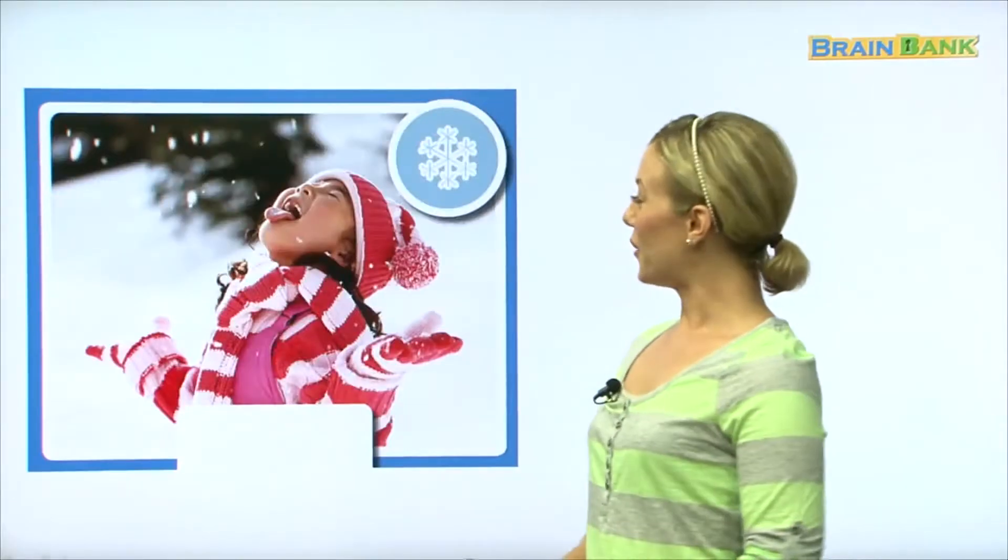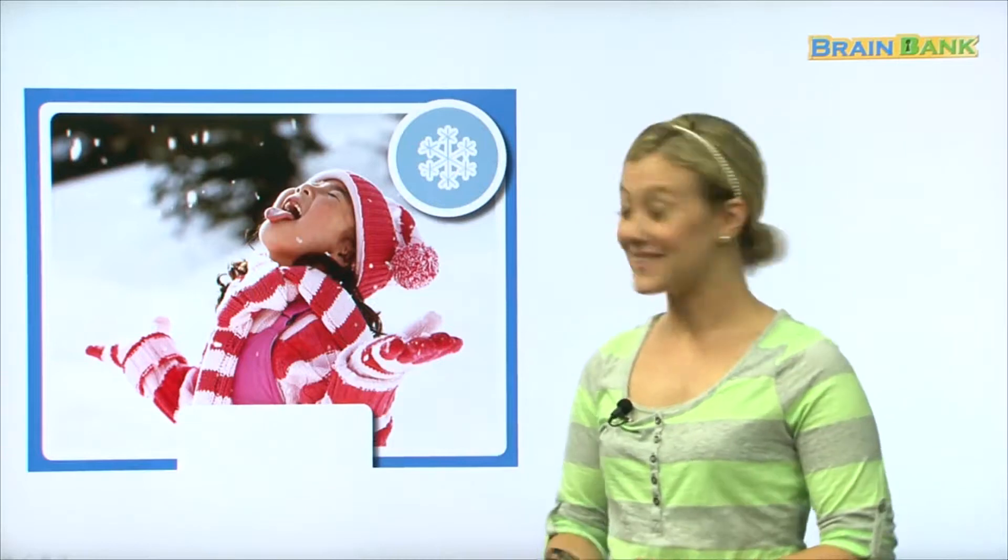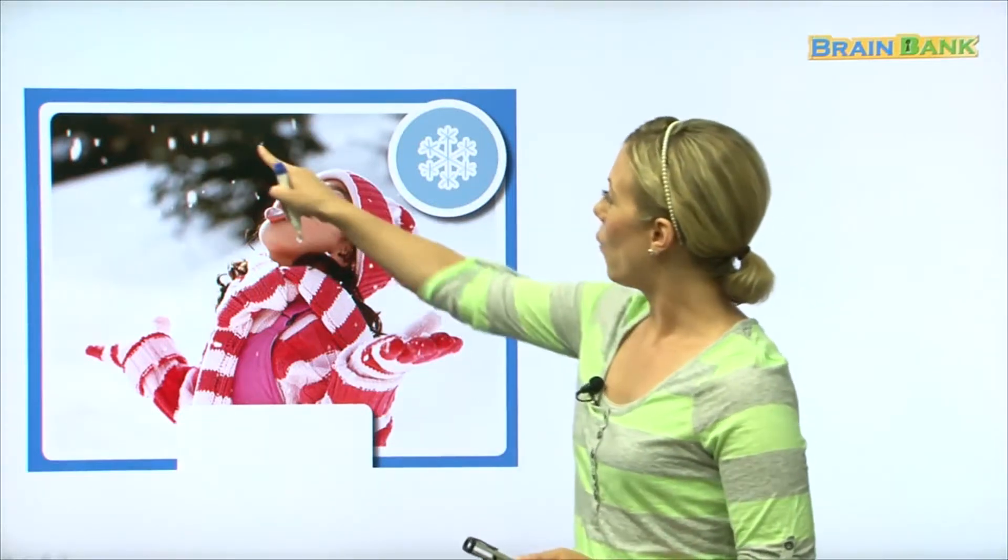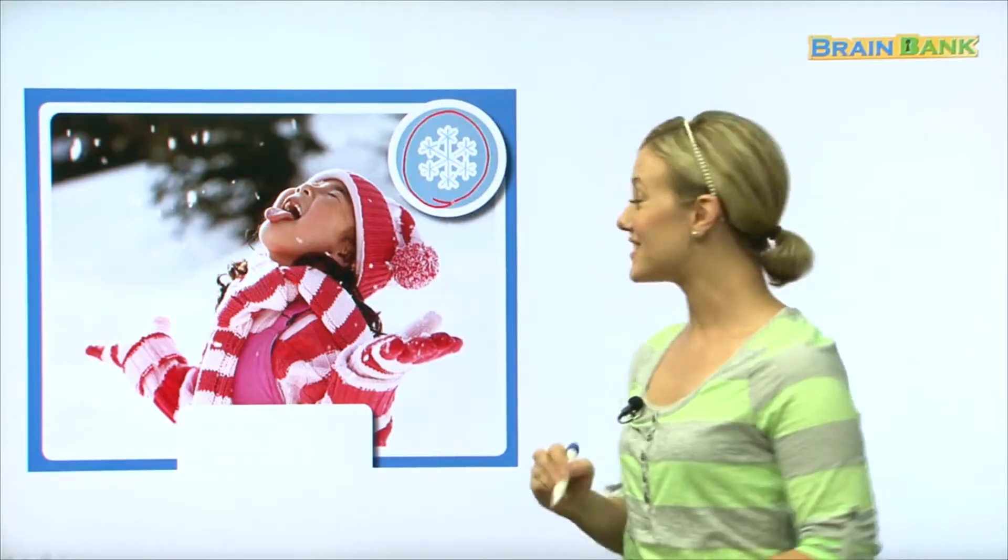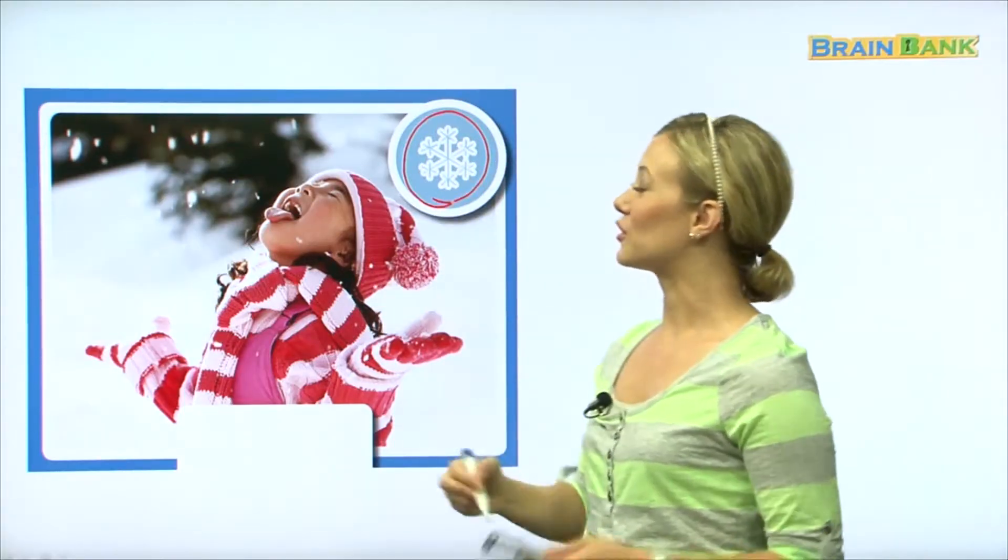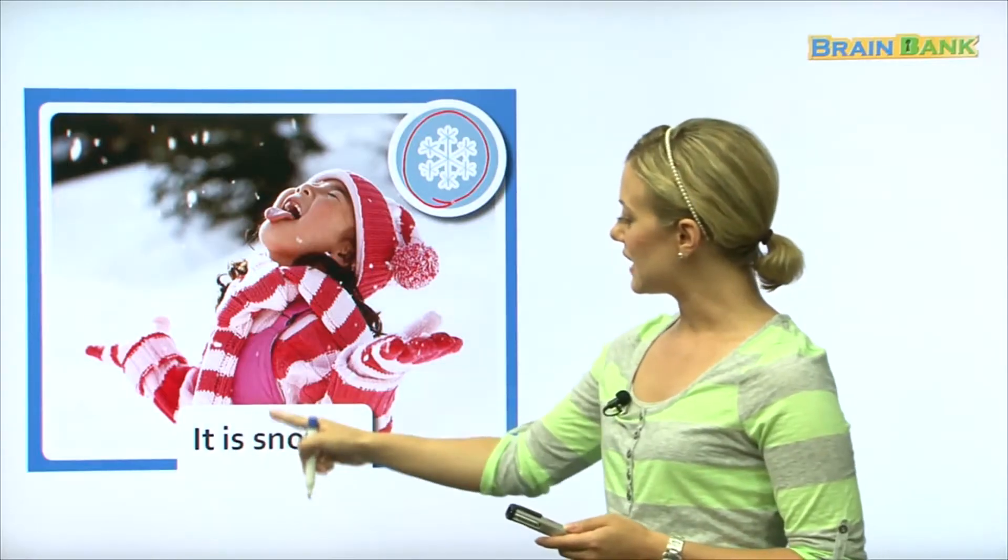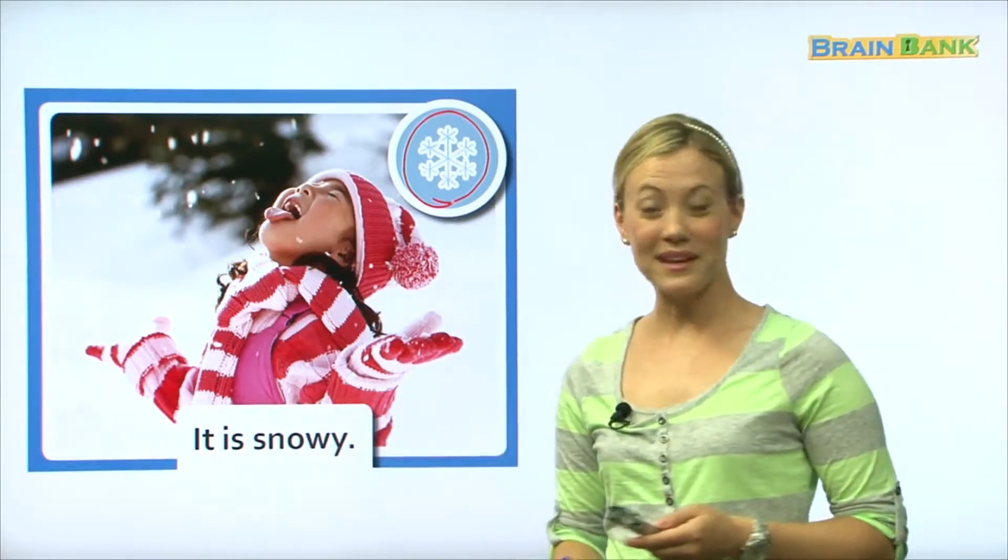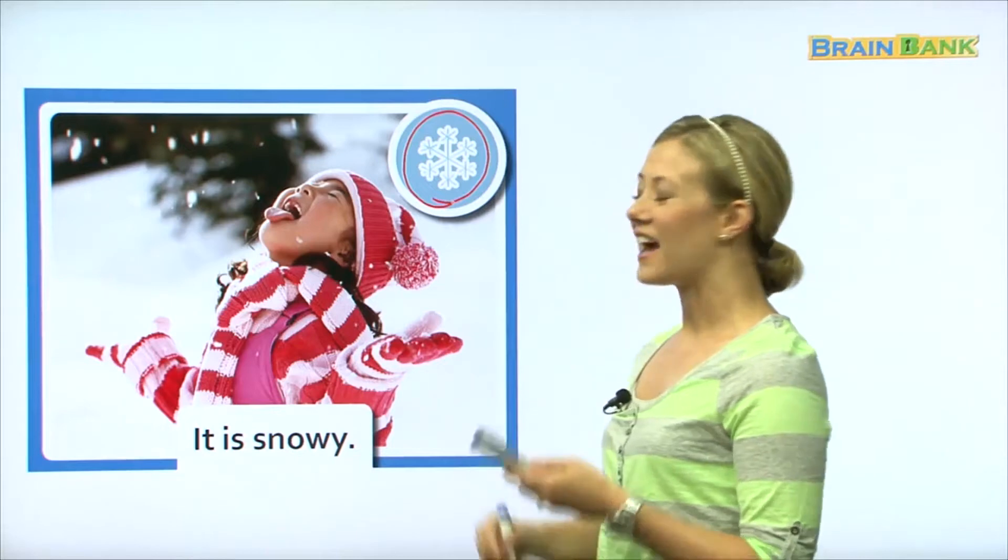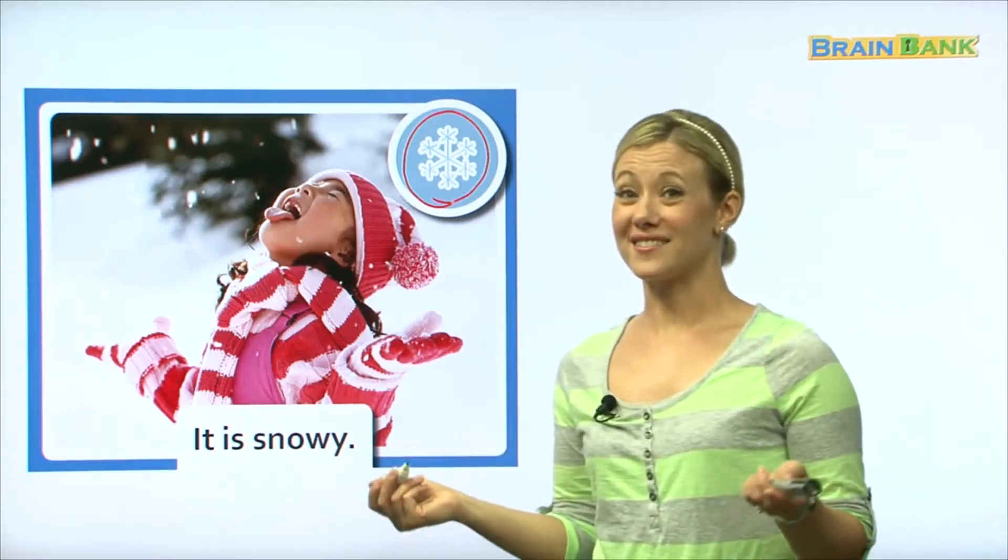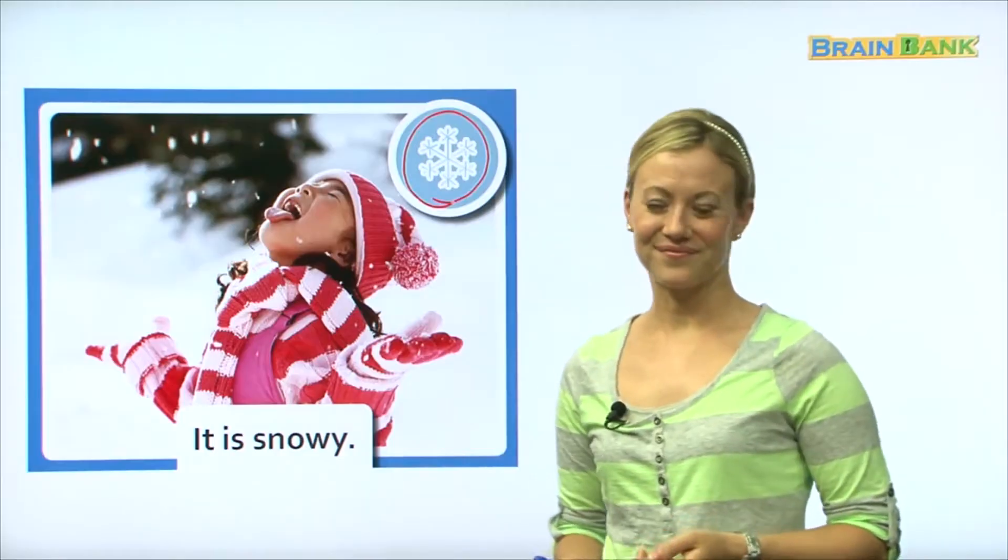Okay so now we have another picture in another kind of weather. What kind of weather is this? Is this windy? No. What is falling from the sky? What are these? Yes, I heard someone say snow or snowflakes. So the little girl is catching the snow on her tongue, very good. So this weather, it is snowy. Can you say it with me? It is snowy. Very good. Now when do we have snowy weather? Do we have snowy weather in the summer? No, we have snowy weather in the winter. Good job!